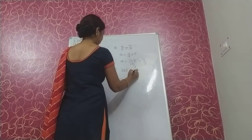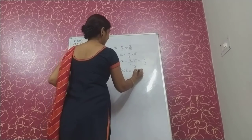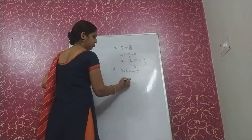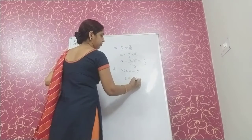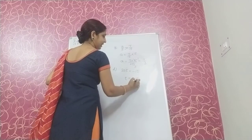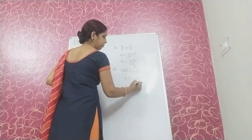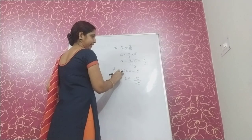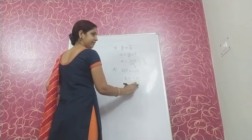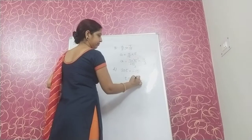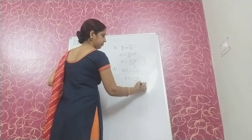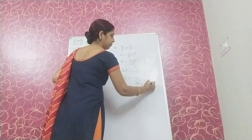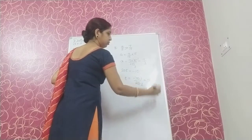Next, 20t equal to minus 10. So t is equal to minus 10 upon 20. 20 is multiplying here, so it goes to the other side and divides. The answer is minus 1 upon 2.